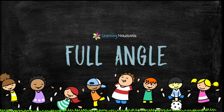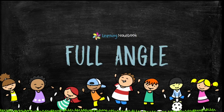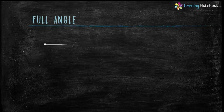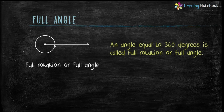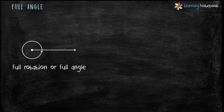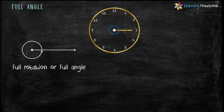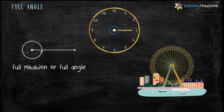The last type of angle is full angle, also called full rotation. This angle measures 360 degrees. Real life examples include a clock where the hands complete a full angle, and a Ferris wheel where the wheel makes a full angle with its leg.